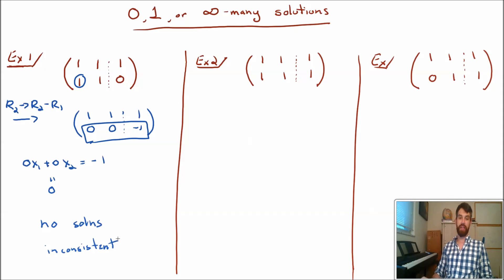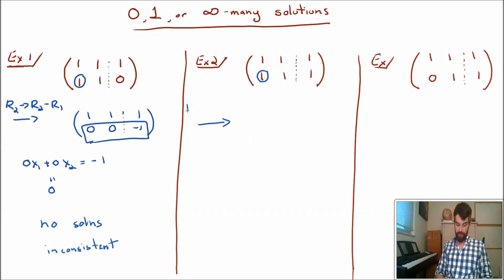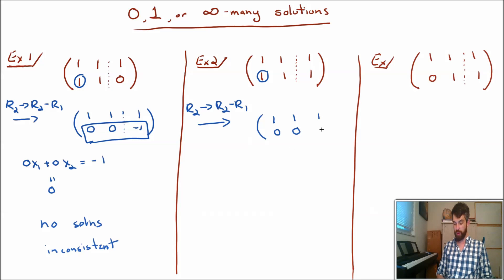Now let's look at the second matrix. Same process — I want to put a 0 in that lower-left location. I'll take the second row and replace it with the second row minus the first row. That doesn't change the first row. Then: 1 minus 1 is 0, 1 minus 1 is 0, and 1 minus 1 is one more 0.